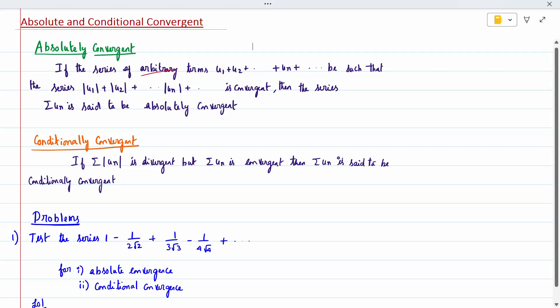Hi all, today's topic is absolute and conditional convergence. For absolute convergence, if the series of arbitrary terms u₁, u₂, etc., uₙ is such that when we take the modulus, the series |u₁|, |u₂|, etc., |uₙ| is convergent, then the series is said to be absolutely convergent.